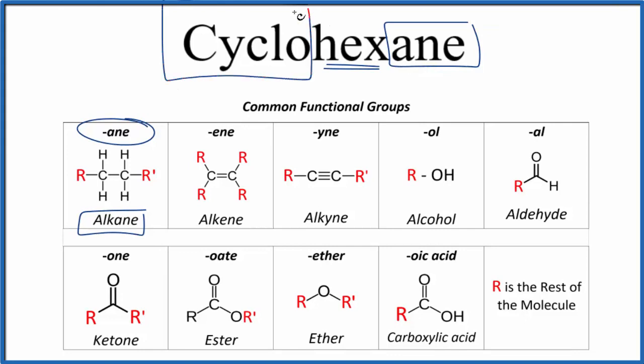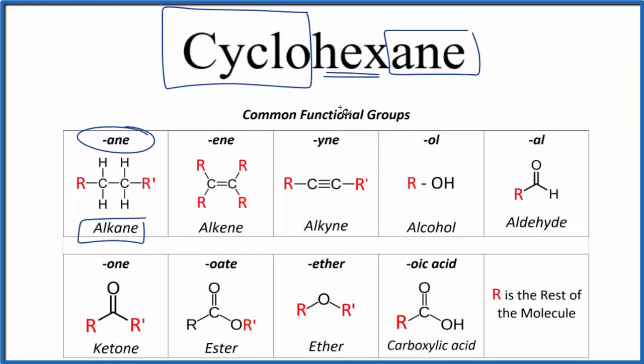Then finally, we have this cyclo. That means we're going to have a ring. So we'll have a ring with six carbons, all carbons and hydrogens, in single bonds. Let's draw that.